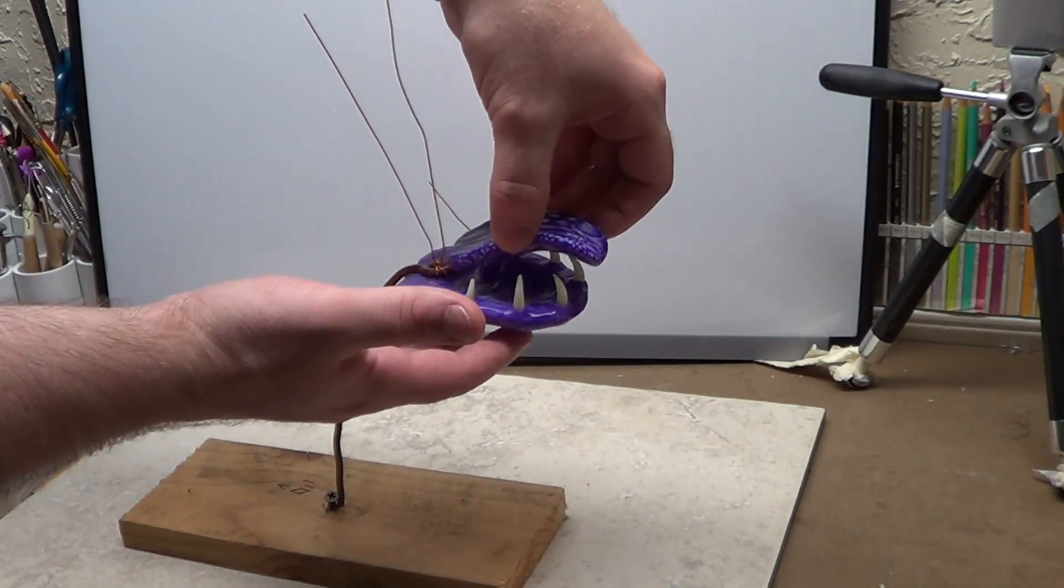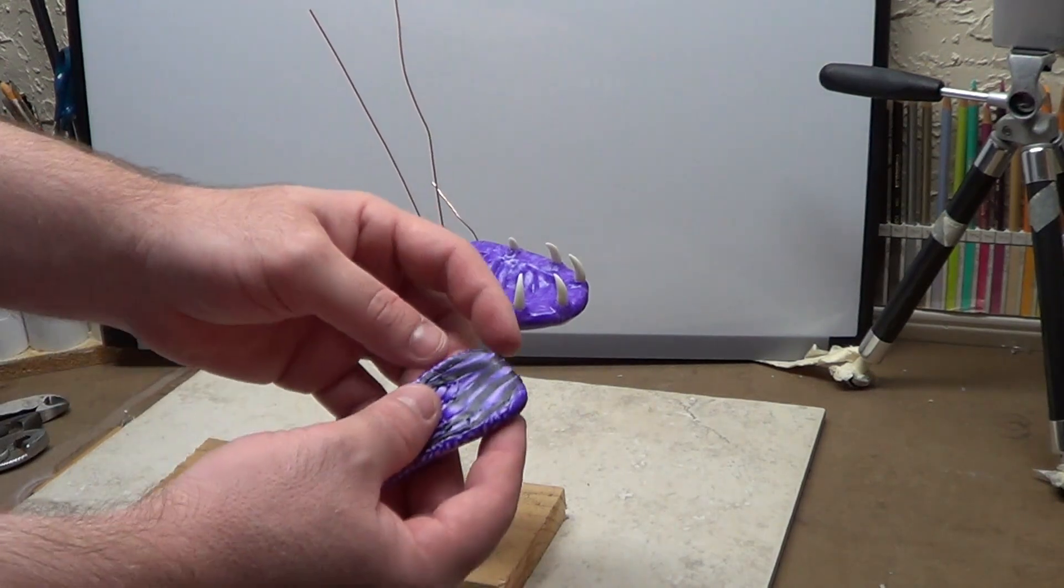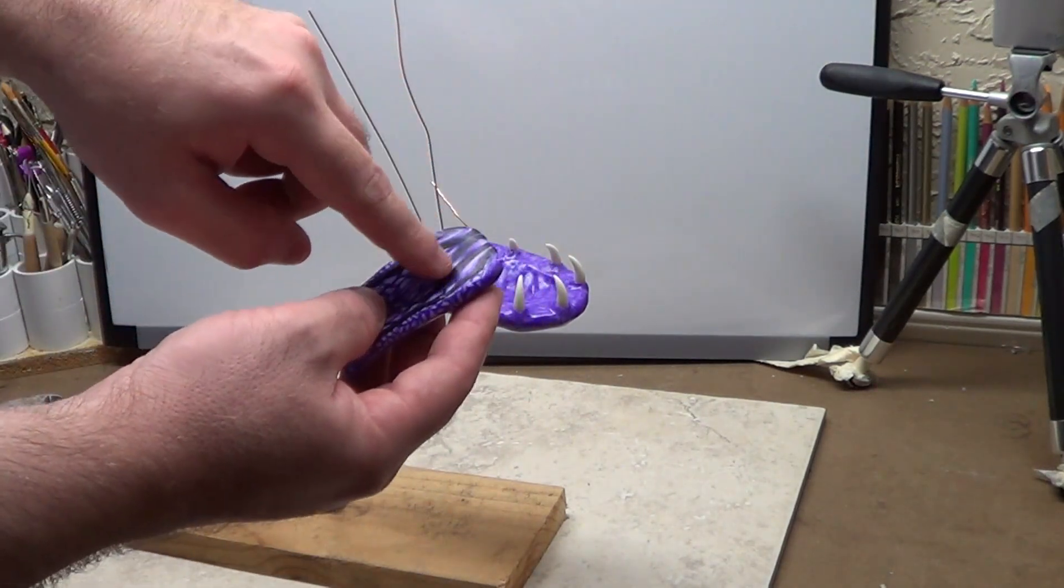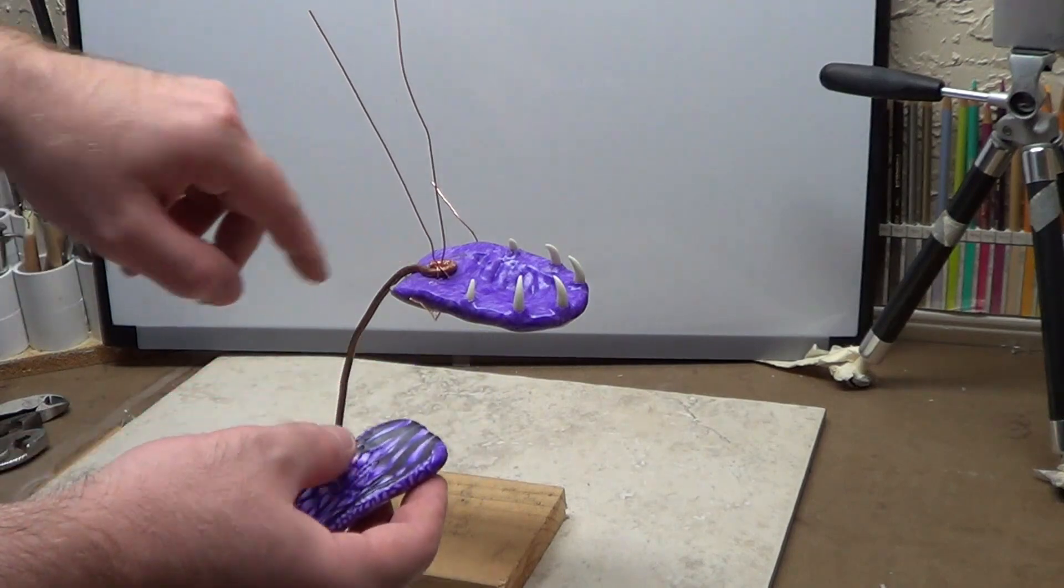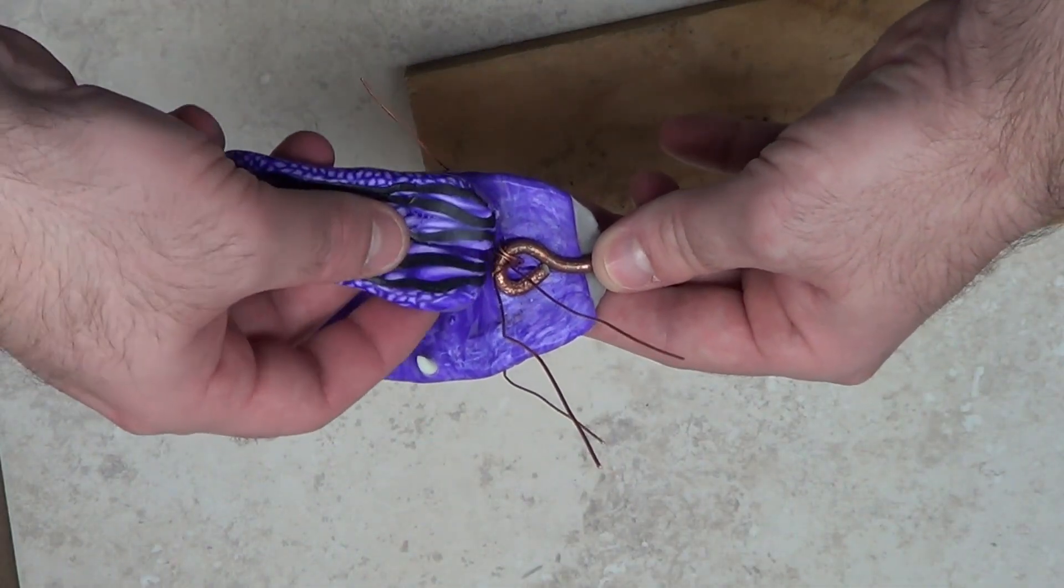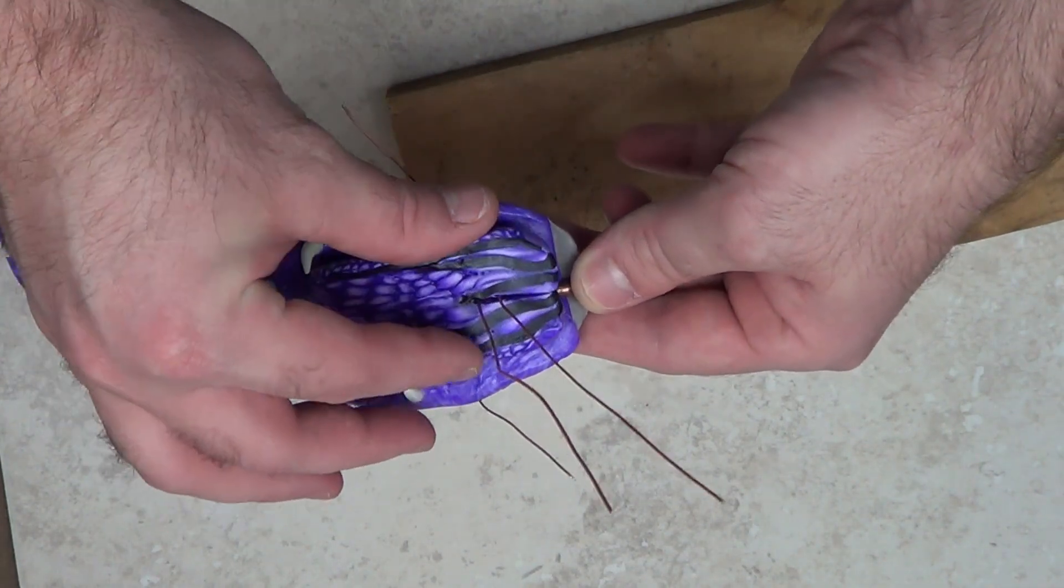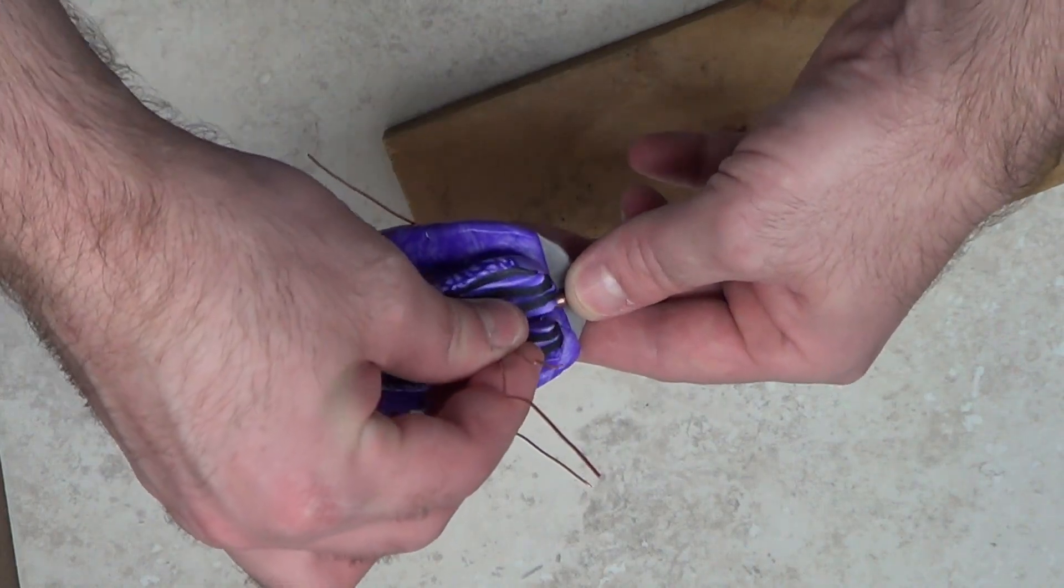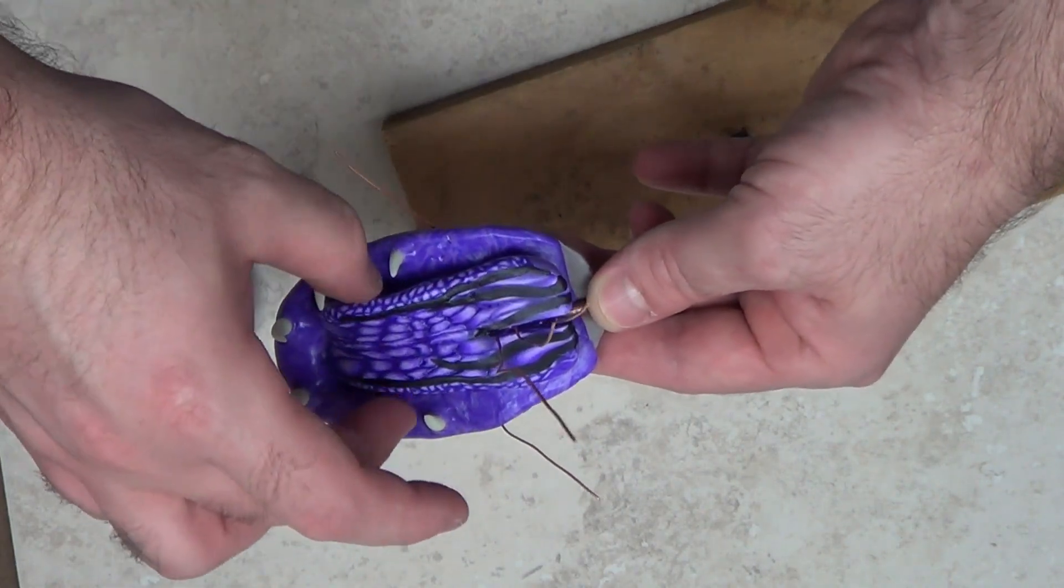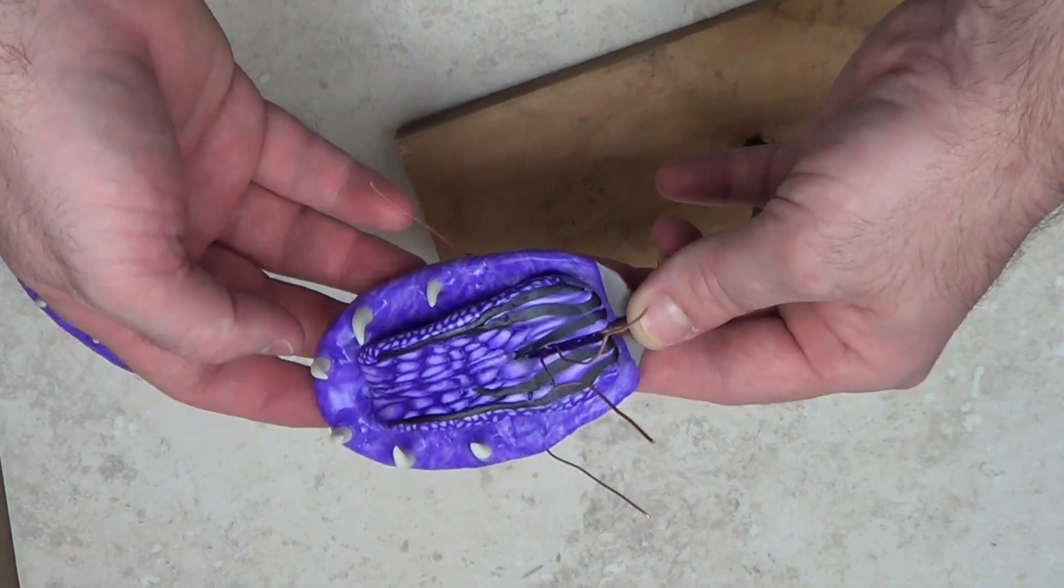And I'm going to have to split this down here. I'm going to have to split this right here. So it can go around that wire. And I'm going to fit that tongue around the copper wire. Push it back. That looks good.